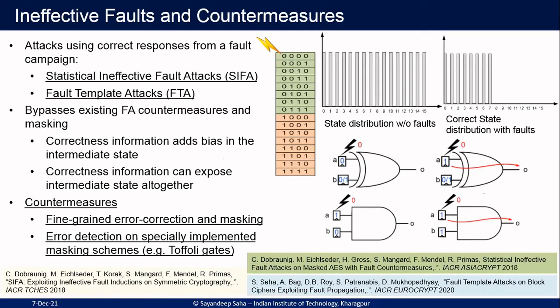Since 2018, there have been some breakthrough results in the context of fault attacks which make all countermeasures vulnerable to attacks. More precisely, we are talking about ineffective faults. What is an ineffective fault? Say I am injecting a fault in a four-bit state — more precisely, a bit stuck-at-zero fault at the first bit of the four-bit state. If I consider all possible valuations, we see that for certain valuations, the fault has no impact on the output, so even if you are injecting the fault, you will get the correct ciphertext.